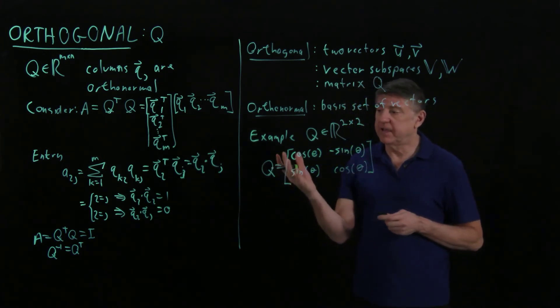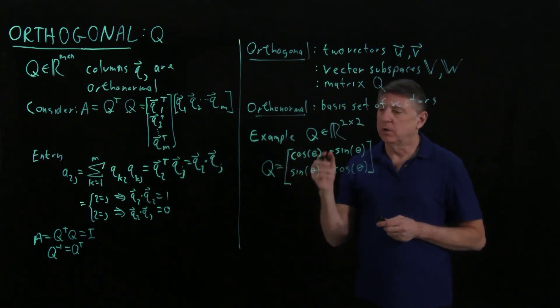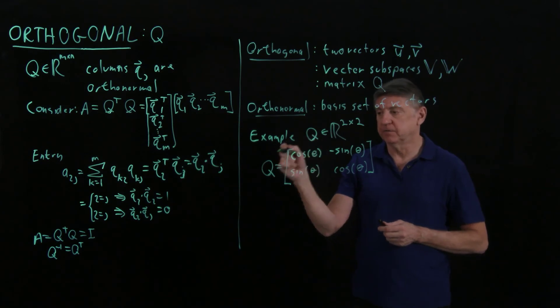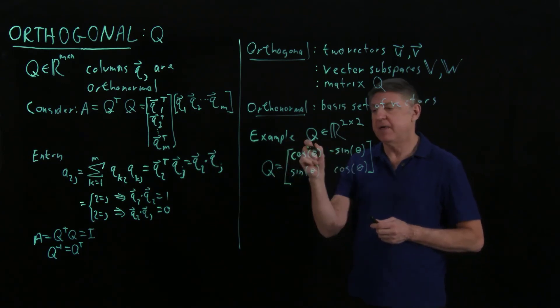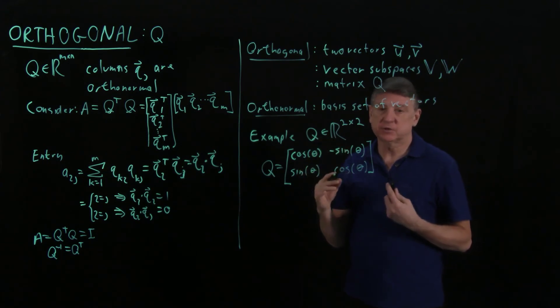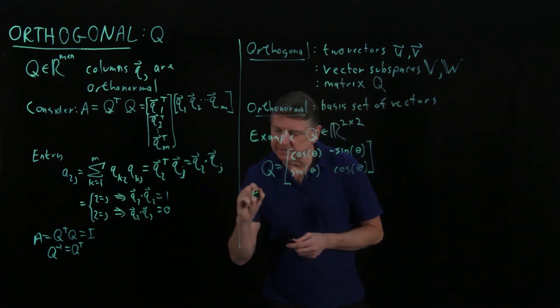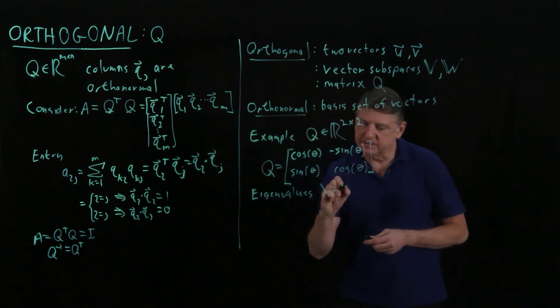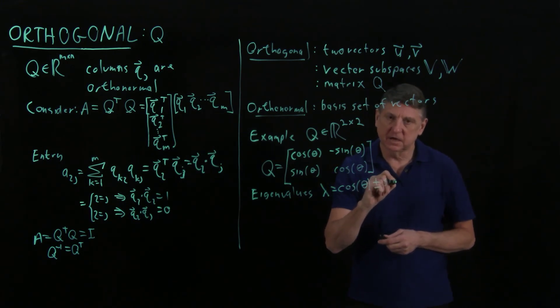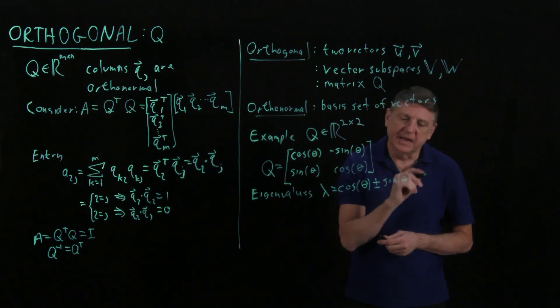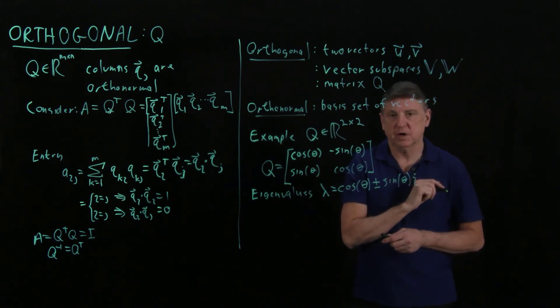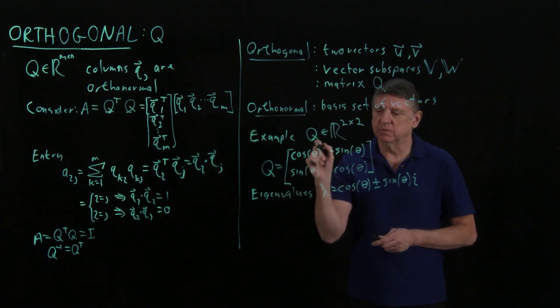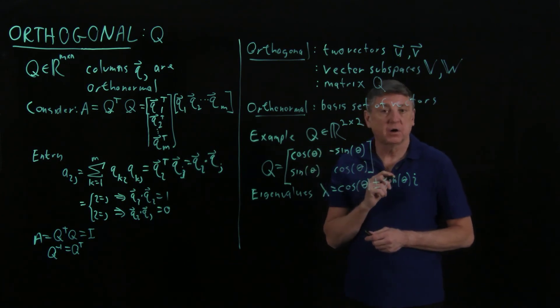Now, what are the eigenvalues of a 2 by 2 orthogonal matrix? Well, when I work this out, I would take the determinant of Q minus lambda times I, and then I would get a quadratic in lambda, and I would solve for it, and that would give eigenvalues, which are lambda equals the cosine of that angle plus or minus the sine of the angle, times the imaginary number i. So this means that in general the eigenvalues of a 2 by 2 orthogonal matrix are complex numbers.